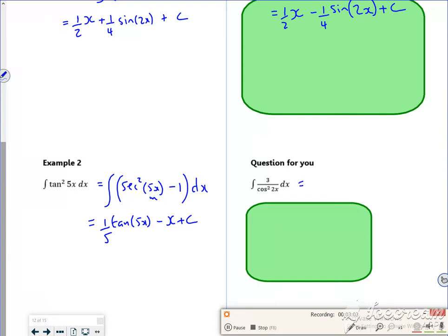This one is 3 secant squared 2x. And secant squared, you know, goes back to tan. But you've got that 2 as well, haven't you? So tan 2x, differentiate that bit, stick it on the bottom, plus c. Right. So it's not too bad, is it?